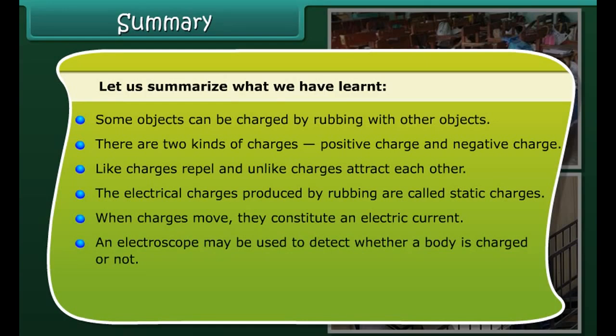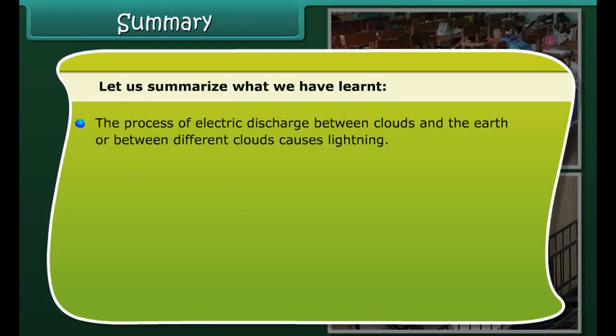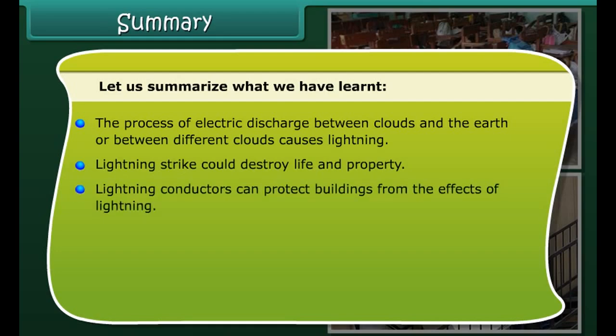The cone of protection is a term used to describe the volume of protection offered, and it provides a simple graphical tool for installing a lightning conductor protection system. The arrangement of a lightning rod showing the cone of protection is illustrated in the figure.